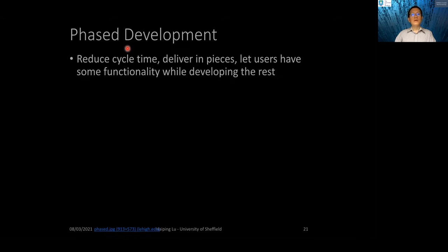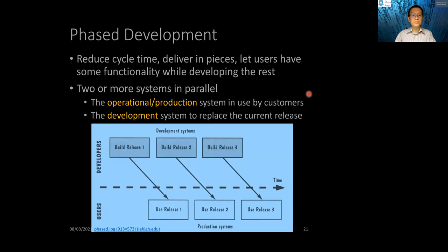Nowadays, phased development is very common. It can reduce the cycle time, reduce the life cycle time, and it will deliver the software in pieces, and let users have some functionality while developing the remaining parts of the software. Therefore, it is common to have two or more systems in parallel.